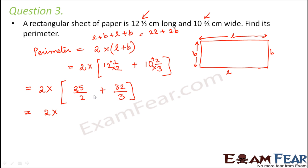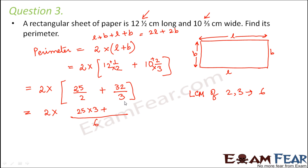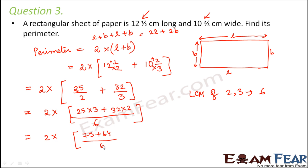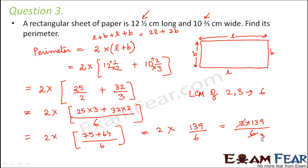Now how do we add these two fractions? The denominators are different, so we find the LCM of 2 and 3, which is 6. Therefore: (25×3 + 32×2)/6 = (75 + 64)/6 = 139/6. So the expression becomes 2 × 139/6. Since 2/6 = 1/3, this simplifies to 139/3 centimeters.